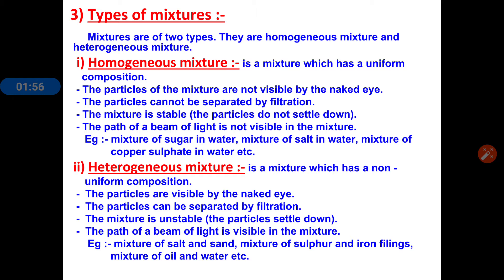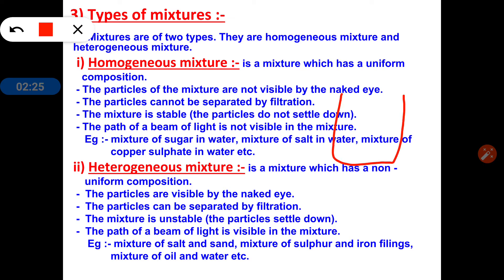This mixture is stable — meaning the particles cannot settle down. When we pass a beam of light through a homogeneous mixture, the beam of light will not be visible. If you take a beaker with a homogeneous mixture and try to pass a beam of light through it, that beam of light will not be visible through the mixture.